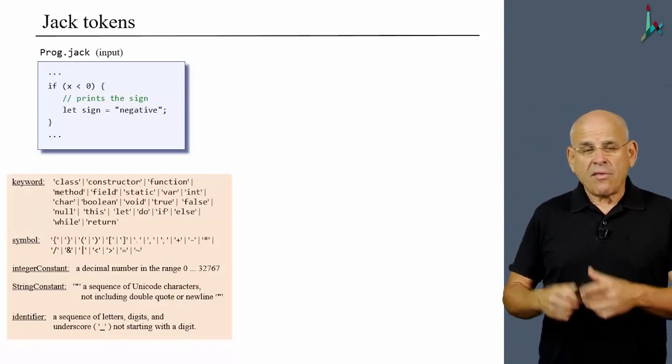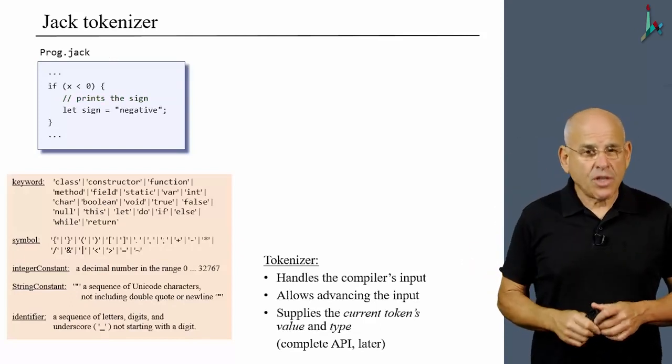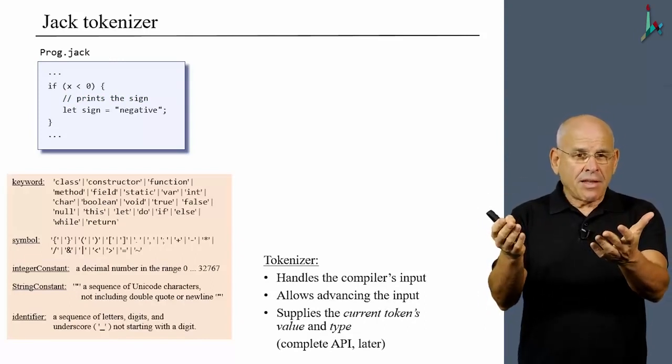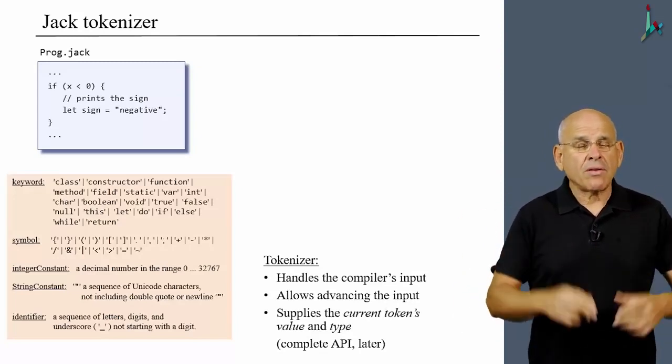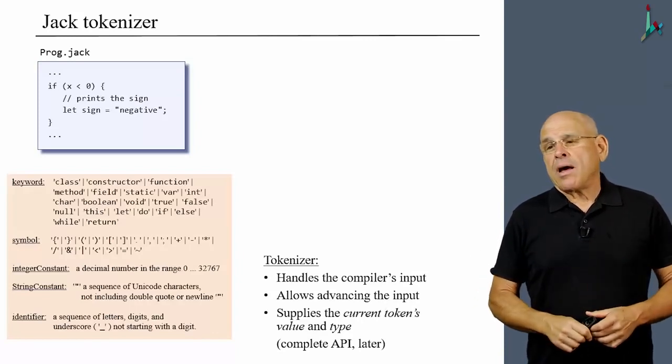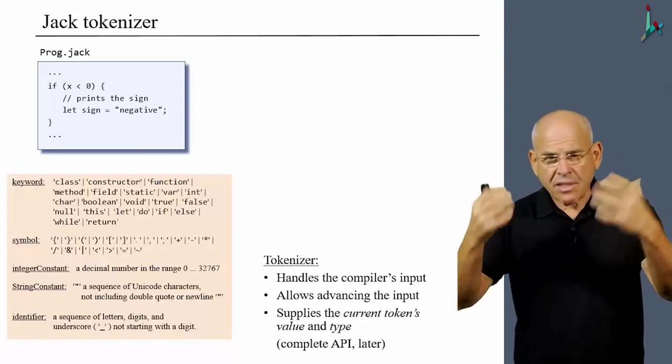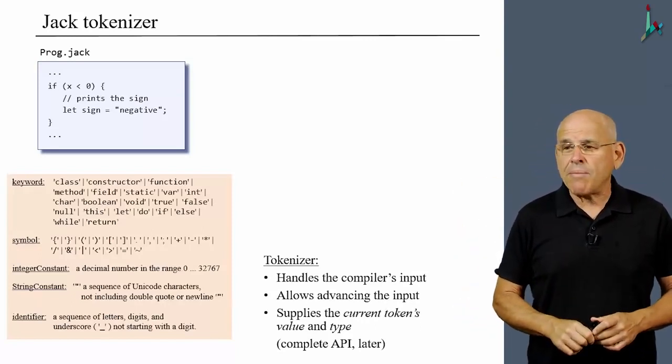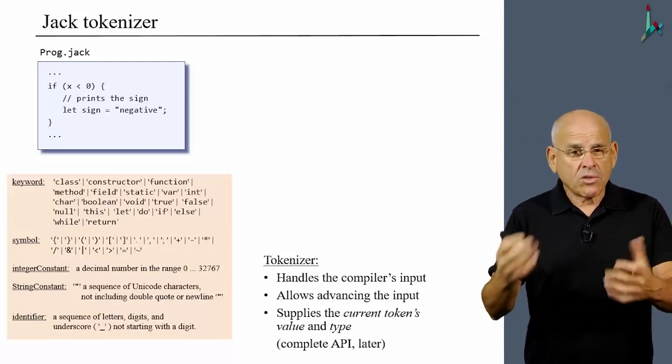Therefore, if we have to write a tokenizer, we can write a program that starts with such an input file. And based on this lexical definition that we have here, we can write code that will carry out the tokenizing for us. And typically, the tokenizer ends up being some class or some service, some module, call it anything you want depending on the language that you use to implement it.